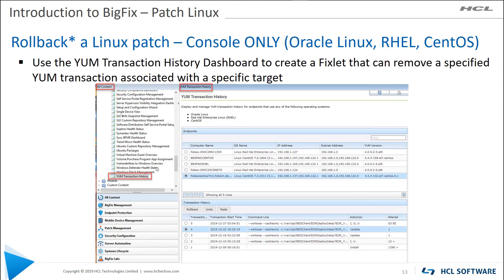Rolling back a Linux patch is available for Oracle Linux, RHEL, and CentOS using the yum transaction history dashboard. If you're using a standard baseline, patches are viewed as individual objects that you can more likely back out one at a time. If you used a multi-package baseline and installed 10 objects at once, yum will want to undo all 10. Your mileage will vary based on the OS's ability to roll back — sometimes it doesn't work correctly.